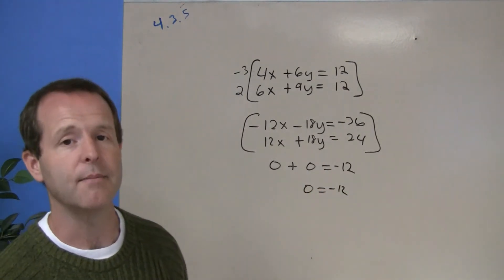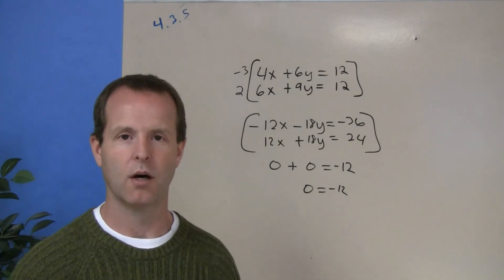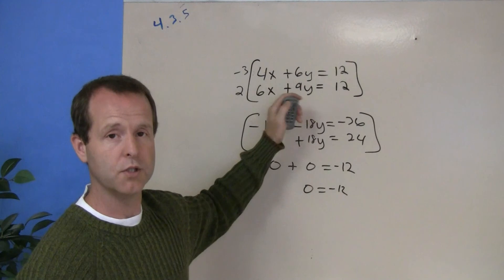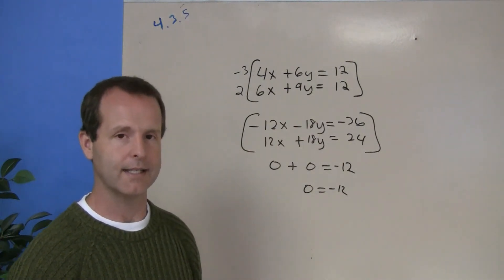I'm left with a false statement. 0 does not equal negative 12. There appears to be then that there is no solution to this system. It's an inconsistent system.